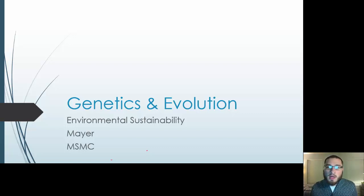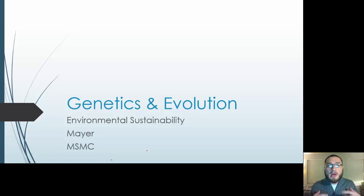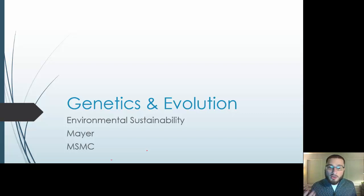Welcome to Environmental Sustainability. Part of this course is learning about the environment and the influence that humans have on it. To get into that, we start off by talking about genetics, evolution, and really, how did we get here? How did we as humans get to the point that we are right now? There weren't always humans around. There were other organisms, and they slowly progressed into humans. So we talk about our genetics and how we progress to become humans over time.